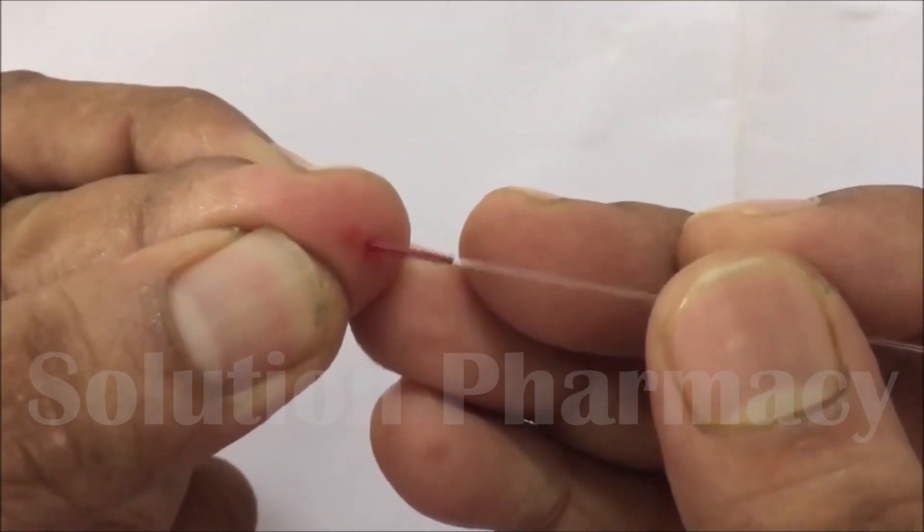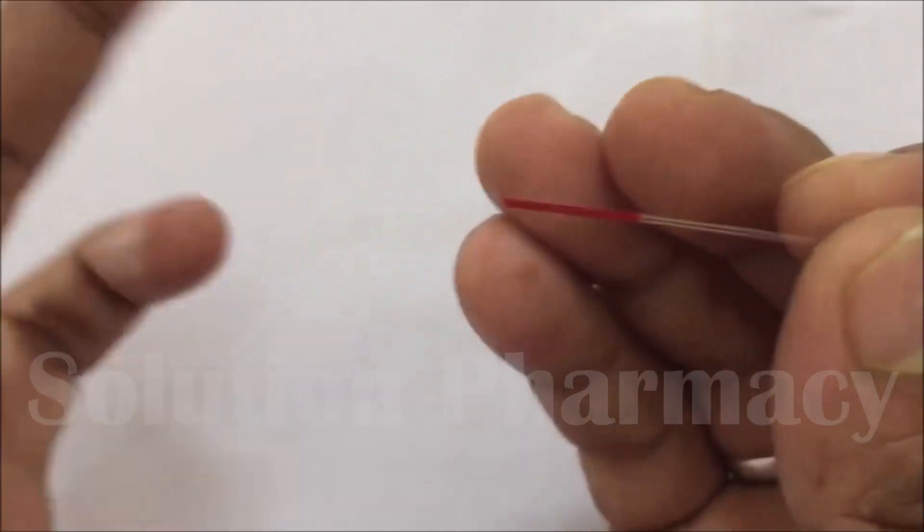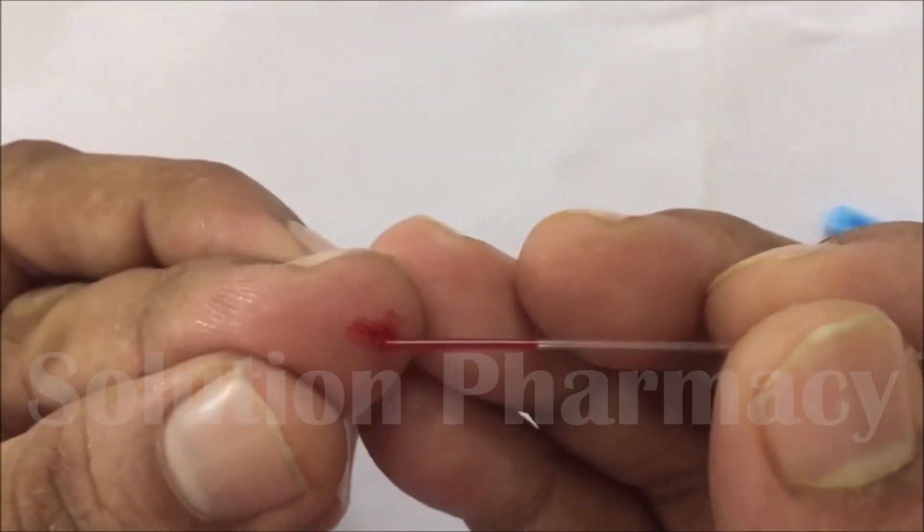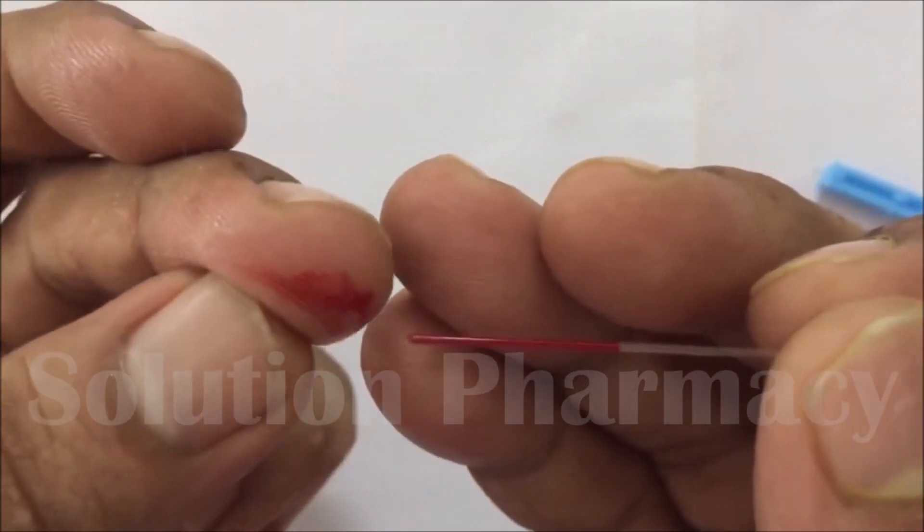Fill the blood in the capillary tube by dipping one end of the tube in the blood. The blood will rise up into the capillary tube by capillary action. You can clearly see here how the blood rises in the capillary tube.